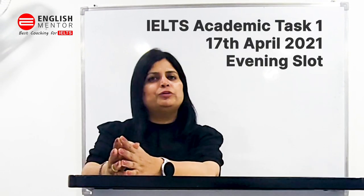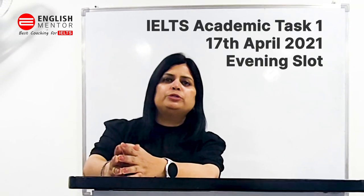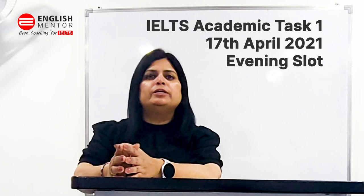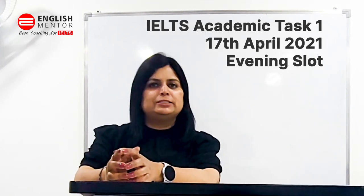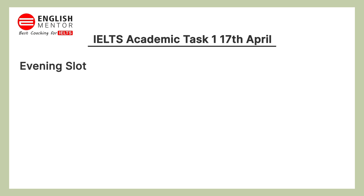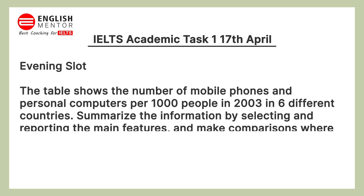Hello everyone. In this video I am going to describe IELTS academic task 1 table. A student got this task 1 in the 17th April exam. The task was: the table shows the number of mobile phones and personal computers per thousand people in 2003 in 6 different countries. Summarize the information by selecting and reporting the main features and make comparisons where relevant.